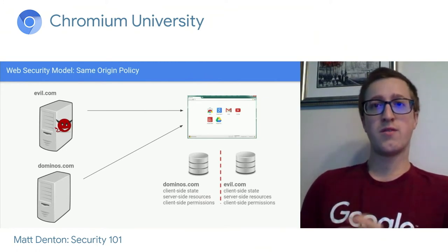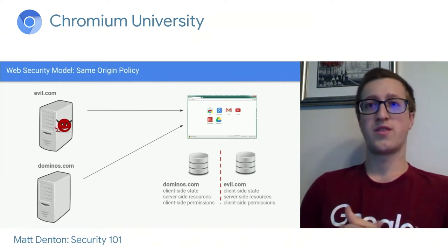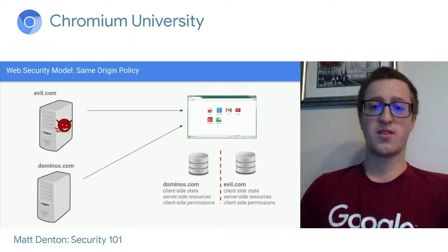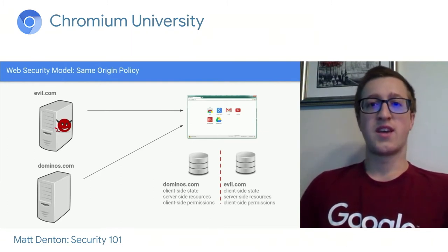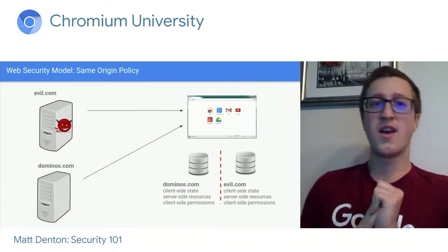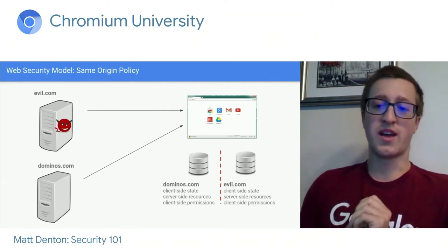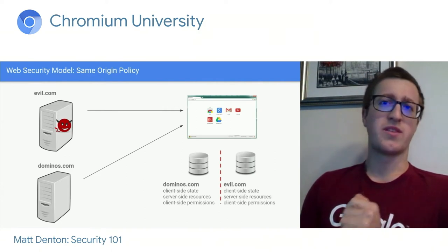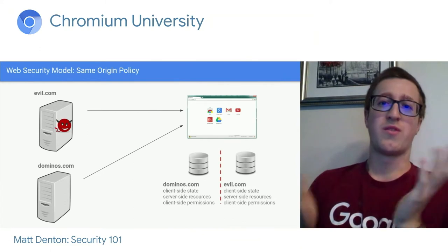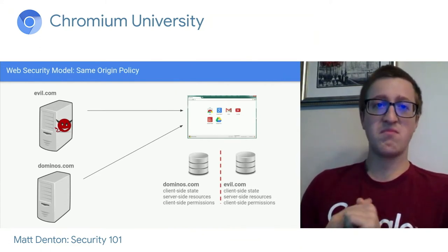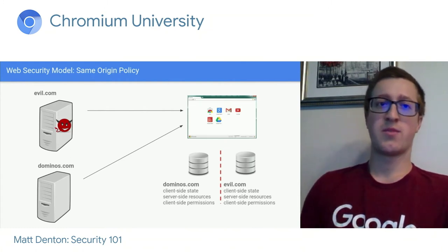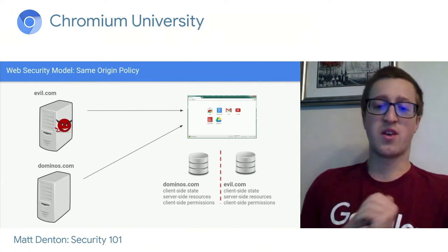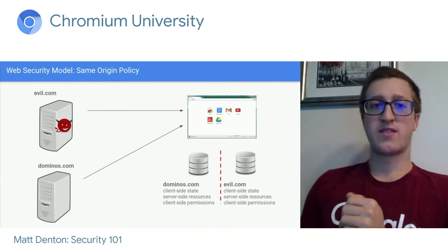The cornerstone of the web security model is known as the same origin policy — basically a form of isolation between websites. So evil.com and dominoes.com should not be able to access each other's data. Dominoes.com has client-side state like your unfinished pizza order, server-side resources like the ability to order a pizza, and client-side permissions like geolocation. Evil.com should not be able to access your location just because dominoes.com has it, order a pizza on your behalf, or access your current pizza order.